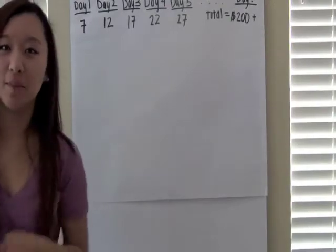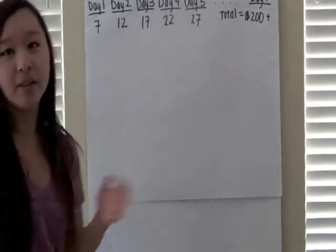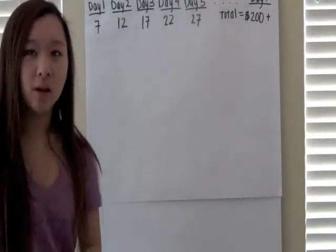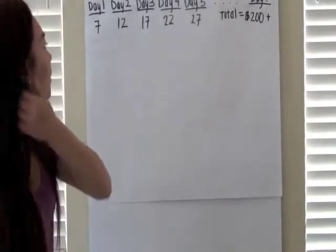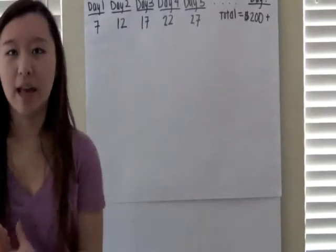This type of problem is a two-step problem that you have to tackle. First of all, you have to find the pattern in the numbers that the problem gives you. In this specific problem, the problem says that you would have five more dollars every day after the first.